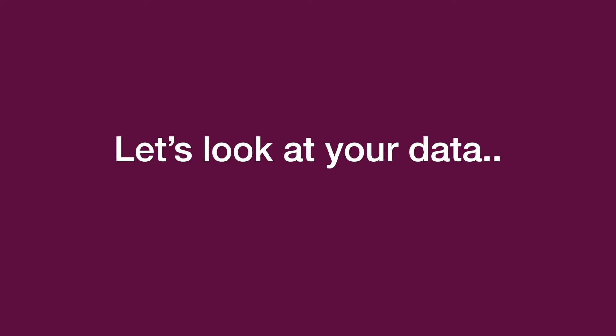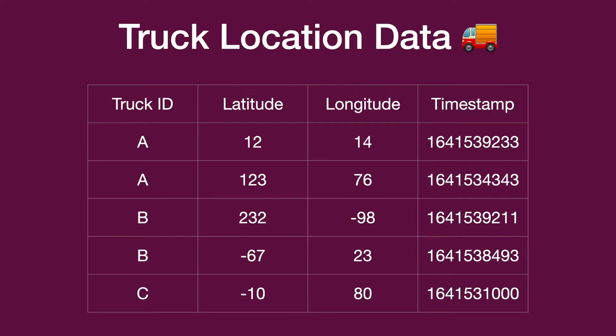Now let's take a look at the data we're going to be working with. Here we have some example time series data. Imagine that you own a truck company and you have hundreds or thousands of trucks all over the world. Each truck is fitted with a GPS machine which is emitting a latitude and longitude every couple of minutes or seconds. If you look at the columns, we have truck ID which is unique to every truck — trucks A, B, and C — along with latitude, longitude, and a timestamp.